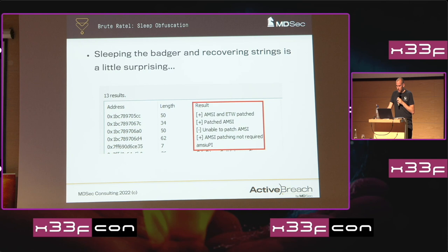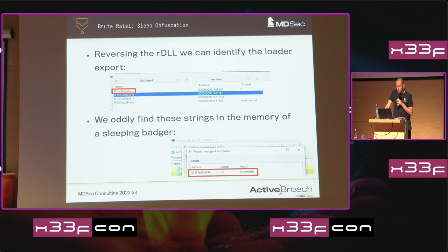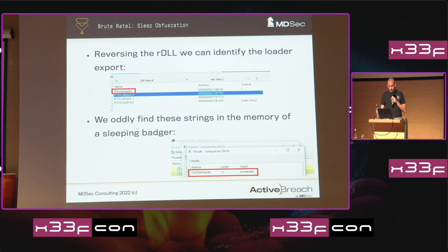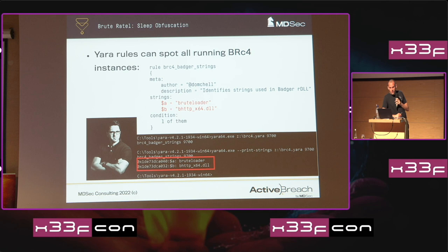That was because the obfuscate-and-sleep mechanism is only protecting the text section. When I threw it into IDA to reverse engineer it, one of the things I initially spotted was 'Brutloader' — that's basically the export endpoint for the reflective DLL. I searched memory for the string 'Brutloader' and spotted it inside the sleeping badger. So we can build a very simple Yara rule to search for all instances of Brutloader running in any process in memory and pluck them out quite trivially.